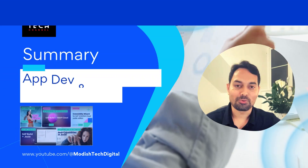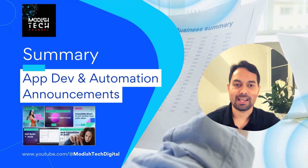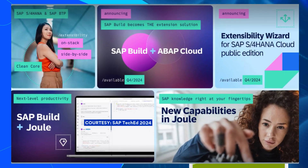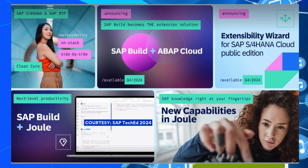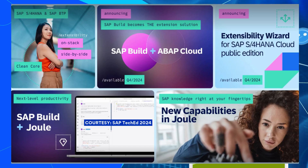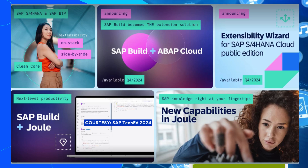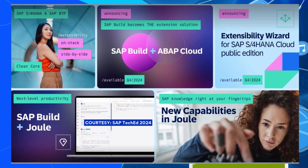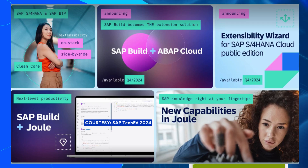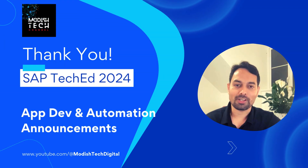Wrapping this up, here is a quick summary of what we have seen in the Application Development and Automation space. SAP reminded us about clean core and how you can achieve it using SAP BTP side-by-side extensibility. SAP Build is now welcoming ABAP developers with support extending to the ABAP Cloud environment. The Extensibility Wizard will help developers on SAP S/4HANA Cloud Public Edition to do all their extensions directly from SAP Build. We also saw many enhancements to SAP Build including Joule capabilities and the custom skills you can create with Joule Studio, available in SAP Build.